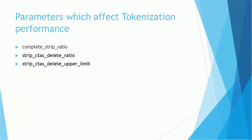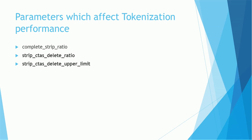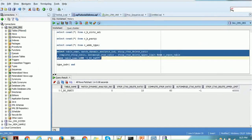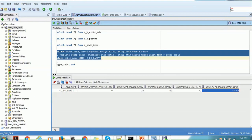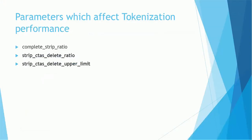The parameters that affect tokenization performance from the previous query are: complete_strip_ratio, strip_ctas_delete_ratio, and strip_ctas_delete_upper_limit. Let me go back to the database and show this table. If you execute this query — I copied it from the PPT — you can see the table: CBO_Party, match dynamic analysis 0, strip CTAS delete ratio 10, complete strip ratio 60, auto merge CTAS ratio -1, strip CTAS delete upper limit 40,000. These are the default values, which you can change by executing an update statement.